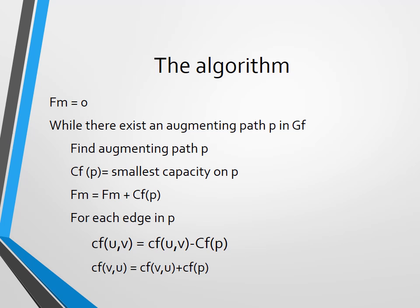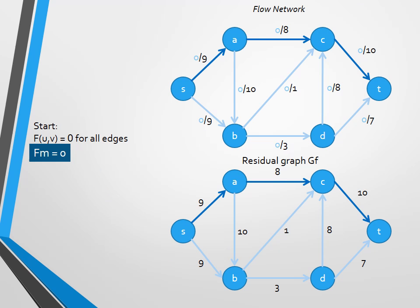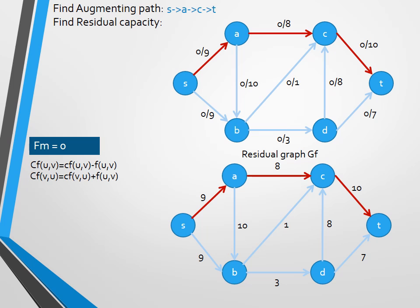Let's see this algorithm in action now with this example. We first set all flow to 0, and in the upper graph, the numerator shows the flow and the denominator shows the capacity. Then, we go looking for an augmenting path. For example, this one, S-A-C-T. We look at the residual graph and try to find the residual capacity, which is 8. We add it to the maximum flow, and then we update the flow in the upper graph. Now, we update the residual graph by adding back edges of capacity 8. First S-A, then A-C, then C-T.